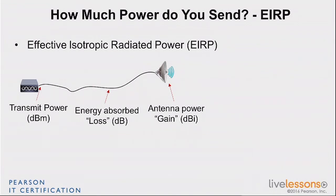And then of course you have the antenna with its gain. All these together give you the energy you are radiating out of your antenna, and each country regulates how much that is allowed to be. You can't send a signal that is too powerful — too powerful to injure people, damage equipment, or disrupt neighboring communications. So there is a maximum amount of energy you have the right to send out of your system, and that is the EIRP.